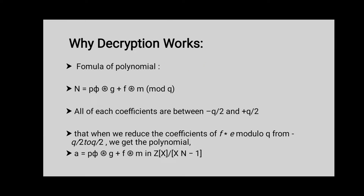After describing the decryption part and the diagram, the question that arises is: why does this decryption method work? The formula of the polynomial is based on P, Q, and M. Considering the final polynomial, we can guarantee that almost every time all of its coefficients are between -Q/2 and +Q/2. For that reason, reducing coefficients modulo Q does not change the polynomial. So when we reduce the coefficients of F*E modulo Q from -Q/2 to +Q/2, we get polynomial A. If we reduce A modulo P, it gives us F*E modulo P, and multiplying by FP gives message M modulo P.